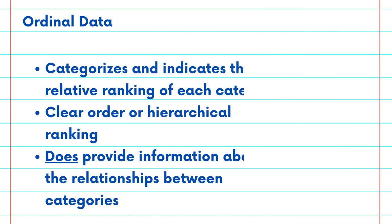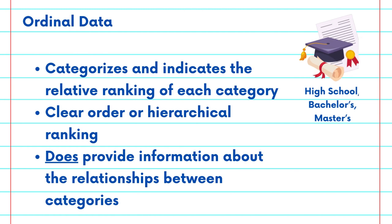Now, let's shift our focus to ordinal data. Ordinal data, on the other hand, does have a specific order or ranking among its categories. An excellent example of ordinal data is education levels, where high school comes before bachelor's, which comes before master's. Here, the order matters.